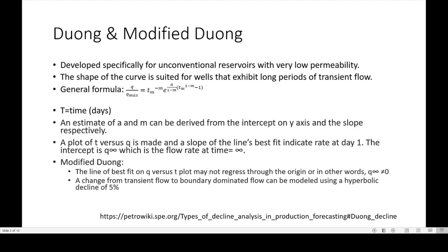I'm not going to go into detail of how you can utilize each decline curve analysis method — I'm only going to talk briefly about when these are used. A plot of Q is made and a slope of the line of best fit indicates a rate at day one. The intercept is at Q infinity, or Q at later time, which is the flow rate at time infinity. The modified Duong is where the line of best fit on Q versus T may not regress to the origin — in other words, Q infinity is not equal to zero. A change of flow to boundary-dominated flow can be modeled using a hyperbolic decline of 5%. So that's the modified Duong method.